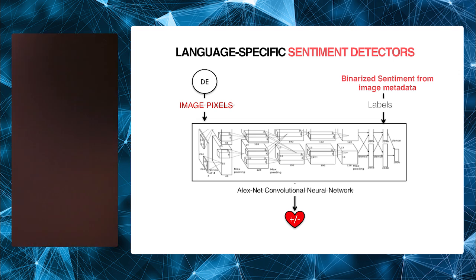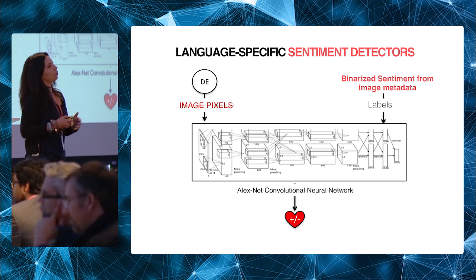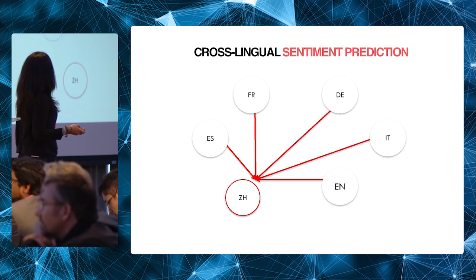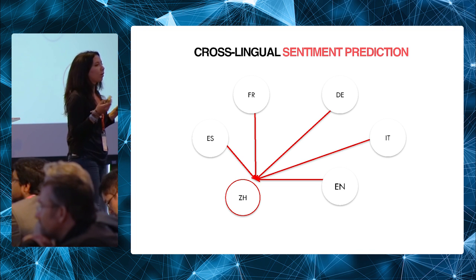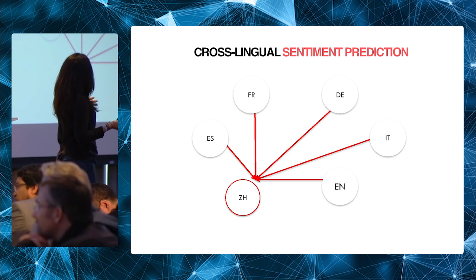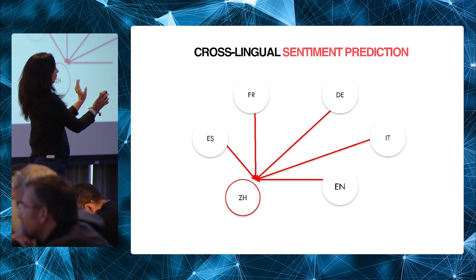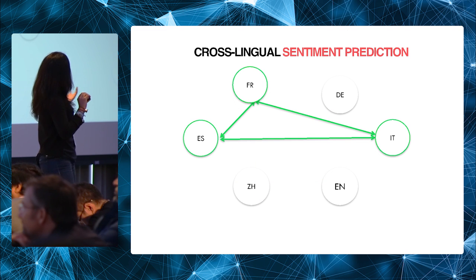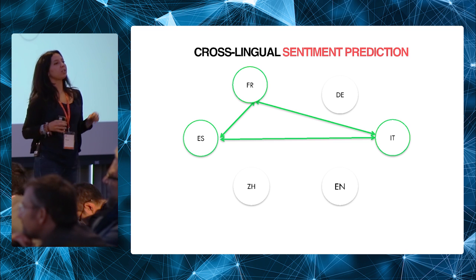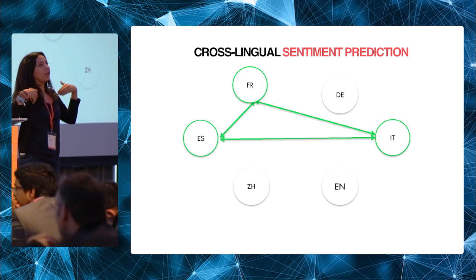One application is language-specific sentiment detectors: a simple neural network that scores image sentiment for a given language community with pretty good accuracy. These models are also comparable across languages. We found that the Chinese sentiment model for images is most different from all others — which makes sense as all others are western languages. The sentiment models for French, Spanish, and Italian communities — Latin languages — tend to be very similar, meaning they share the same way of expressing emotions through pictures.